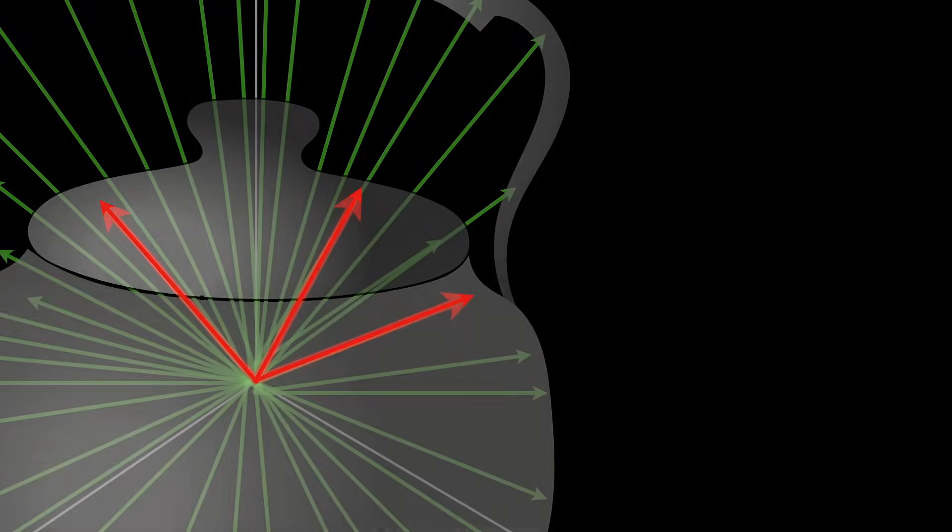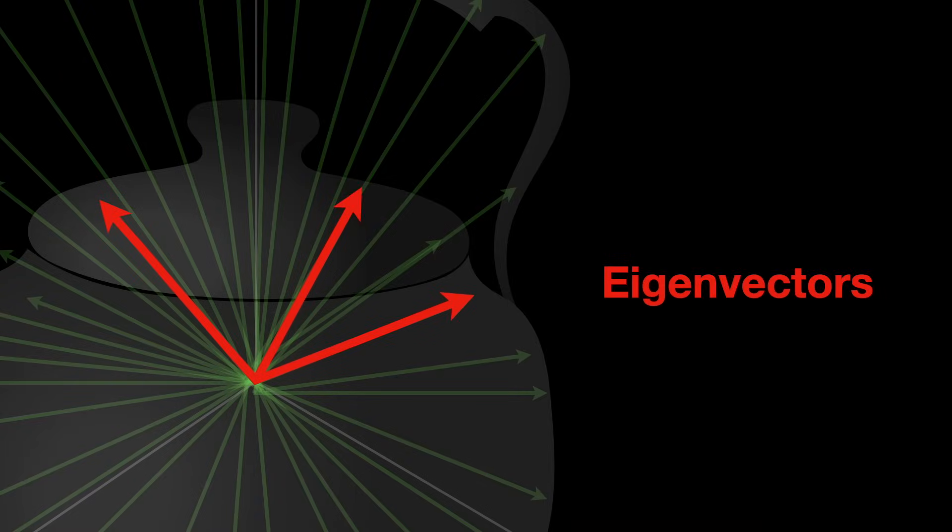These special vectors are called eigenvectors of the transformation, and the amount by which they increase or decrease is called their respective eigenvalues.